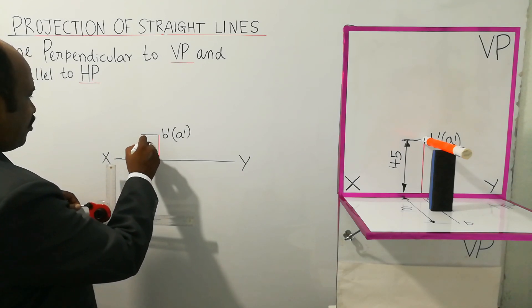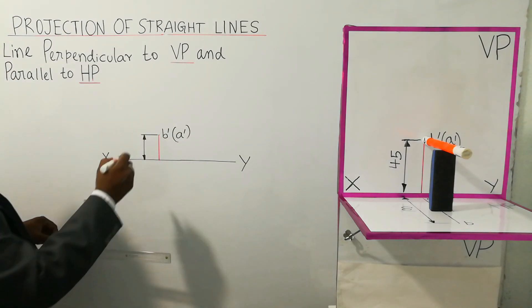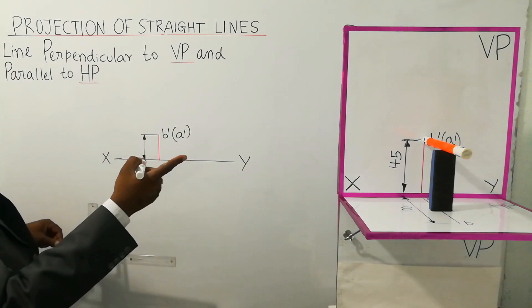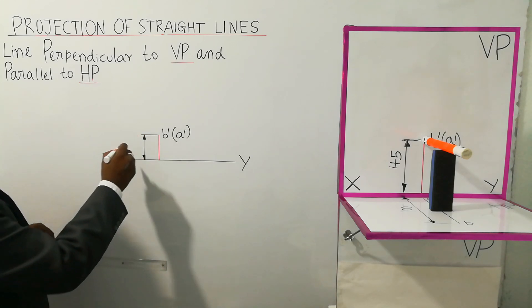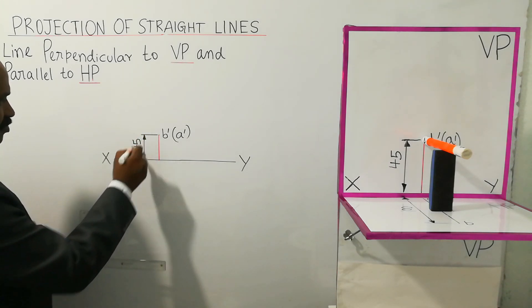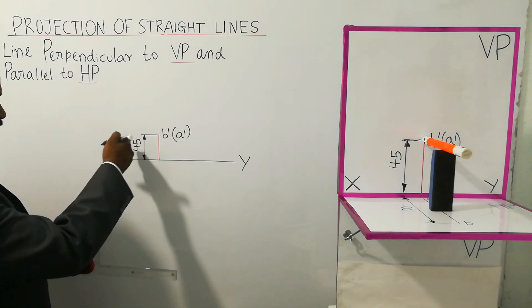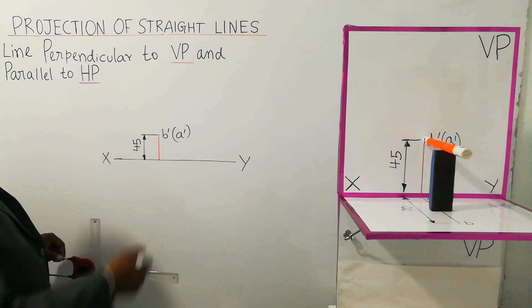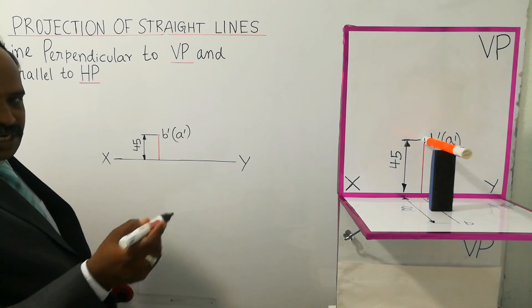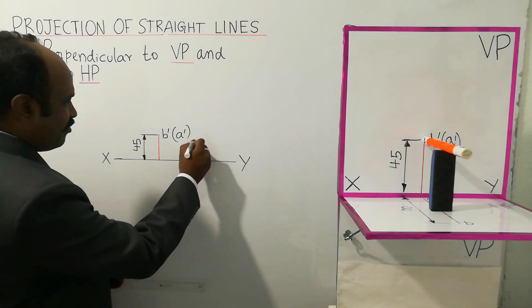If you see the distance above HP, 45mm is there. Draw 45 — put 45 at the center of the line. This is the front view.